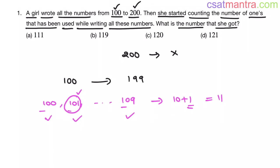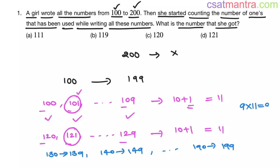The same pattern will repeat for 120, 121 up to 129. See, 10 ones, and in 121 we have one more 1. So 10 plus 1 equals 11. The same pattern will continue for 130 to 139, 140 to 149, like this 190 to 199. So total, how many 11s you have? 9 elevens. So 9 into 11, that is 99.